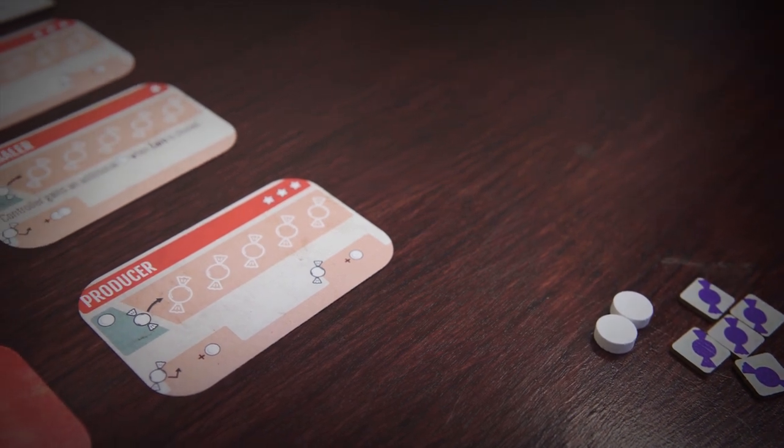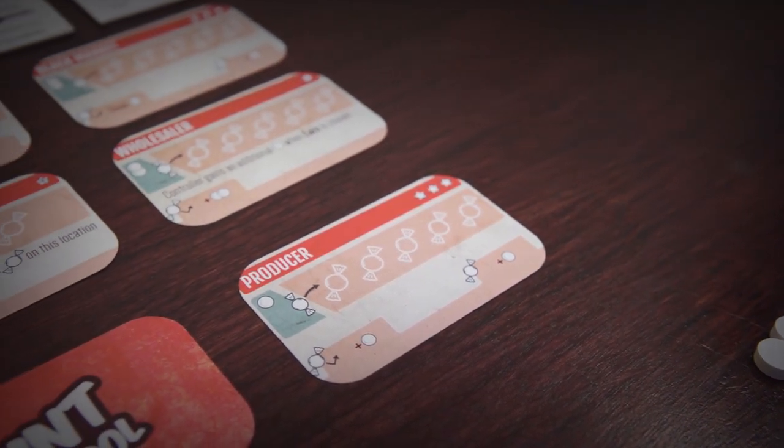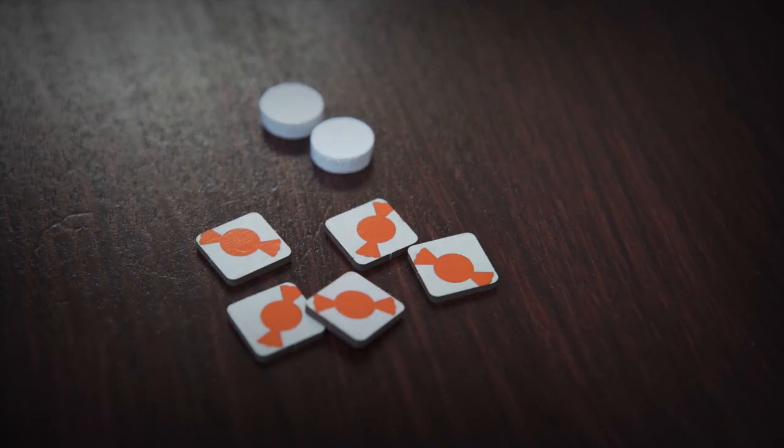Each player takes two mints from the supply as their starting currency. Each player selects a color and takes the five influence tokens of that color.